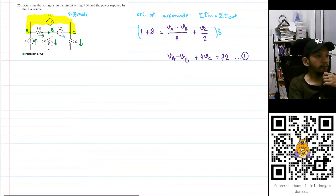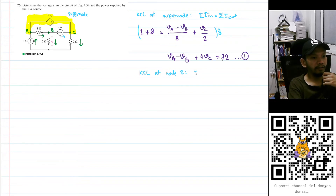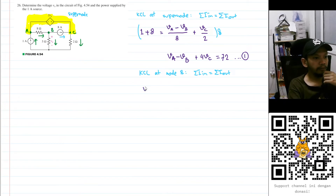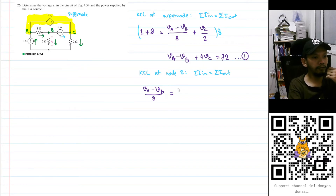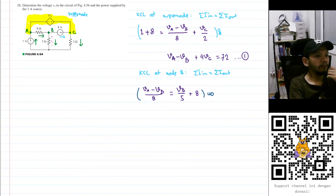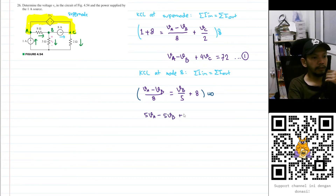Now let's apply KCL at node B. KCL states the sum of currents in equals the sum of currents out. The current going in is (Va − Vb)/8, and the currents going out are Vb/5 and 8 amperes. Multiplying both sides by 40, we get 5·Va − 5·Vb on the left.